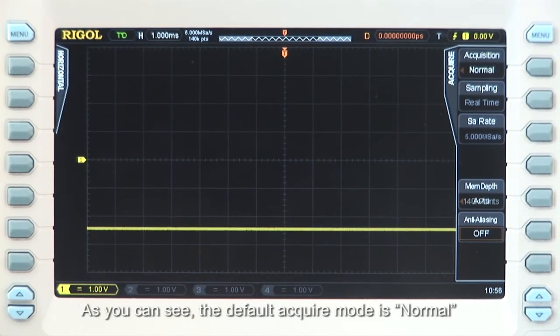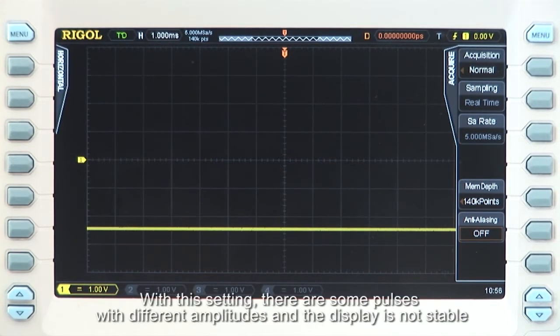As you can see, the default acquire mode is set to normal. With this setting, there are some pulses with different amplitudes and the display is not very stable.